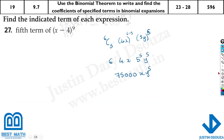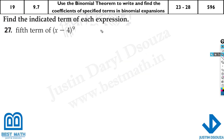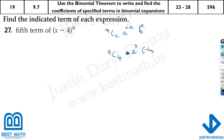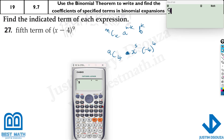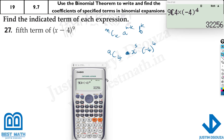What about this one — we need the fifth term and it's raised to the power 9. So it's n C k times a to the power n minus k times b to the power k. We write 9 C 4 (one less than 5) times x to the power 9 minus 4, which is 5, times negative 4 raised to the power 4. Using the calculator directly — minus 4 raised to the power 4 is positive. The answer is 32,256 x raised to the power 5.